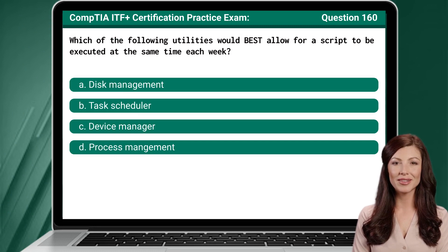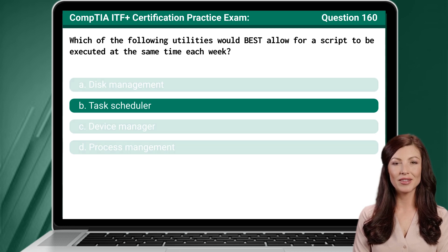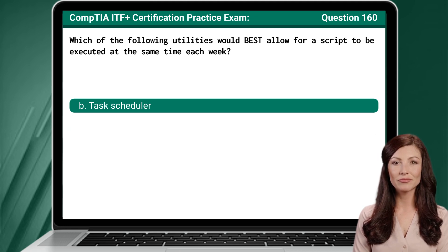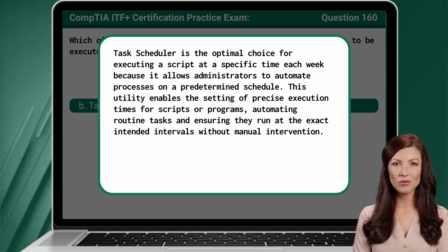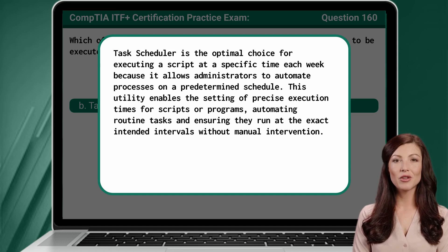Question 160. Which of the following utilities would best allow for a script to be executed at the same time each week? The answer is B: Task Scheduler. Task Scheduler is the optimal choice for executing a script at a specific time each week because it allows administrators to automate processes on a predetermined schedule. This utility enables the setting of precise execution times for scripts or programs, automating routine tasks and ensuring they run at the exact intended intervals without manual intervention.